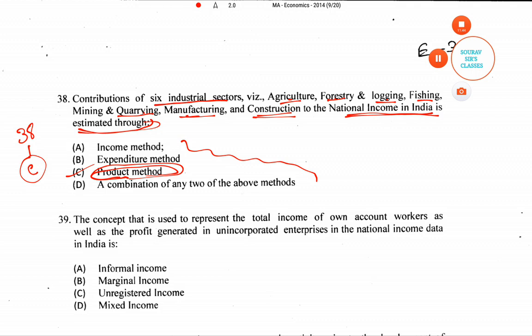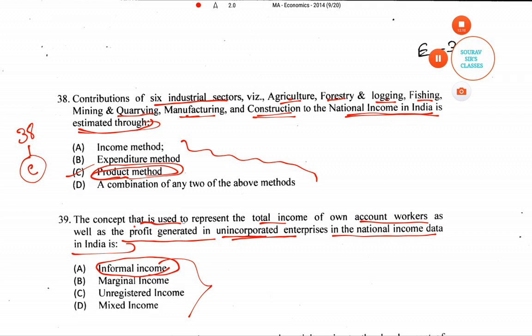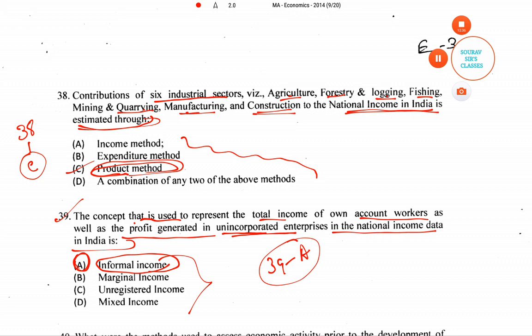Question number 39: the concept used to represent the total income of own account workers as well as profit generated in unincorporated enterprises in India's national income data is mixed income. So the right answer for question number 39 is option A.